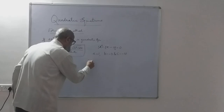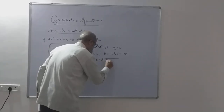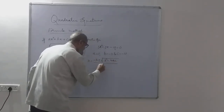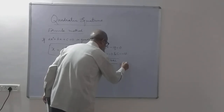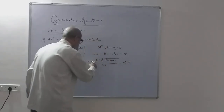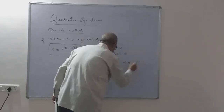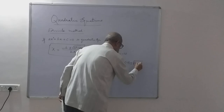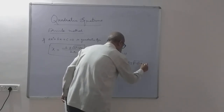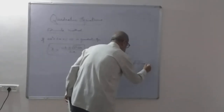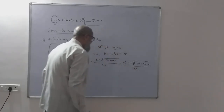Then X = (-b ± √(b² - 4ac)) / 2a. You write this formula, then substitute in this: minus of minus 3, plus or minus square root of (-3)² minus 4 × 1 × (-10), divided by 2 × 1.